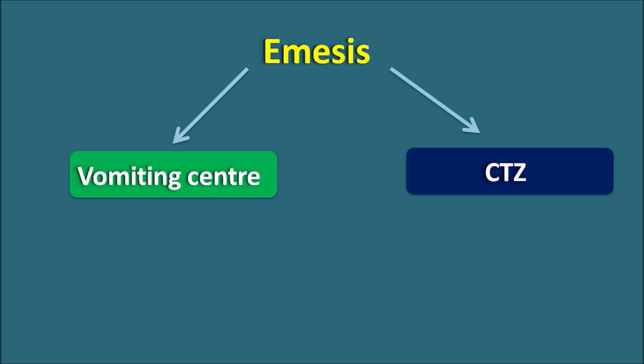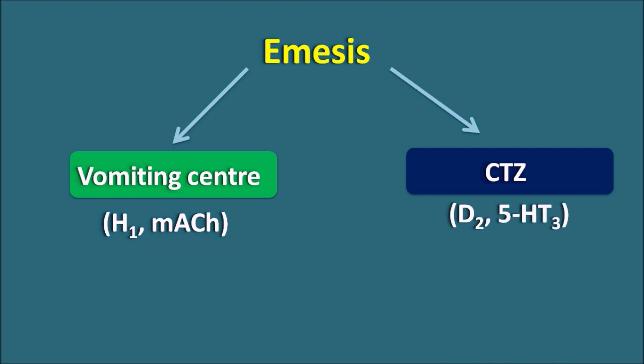Today in this video we are going to discuss the different types of anti-emetics, how they are used, and what are the important side effects of these drugs. These anti-emetics are going to work on two important centers: the vomiting center and the CTZ. The vomiting center is expressed with H1 receptors and muscarinic acetylcholine receptors. Similarly, the CTZ chemoreceptor trigger zone is equipped with D2 dopamine receptors as well as 5HT3 receptors.